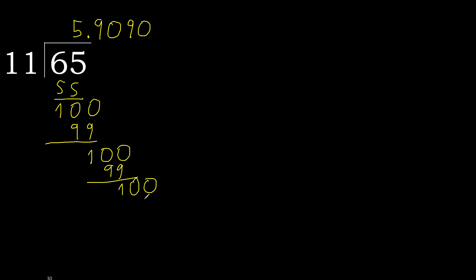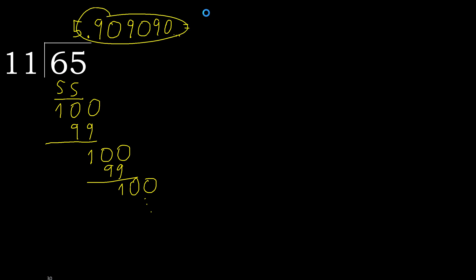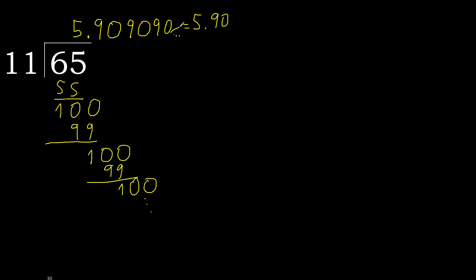Therefore repeat — 90 repeats. 65 divided by 11 is 5, and after the point: 90 repeat, repeat.